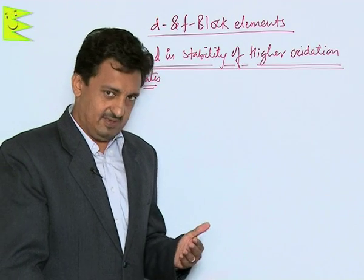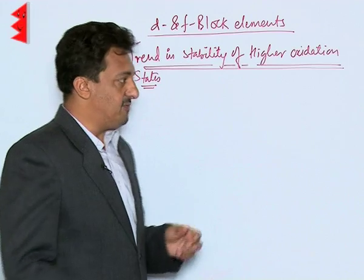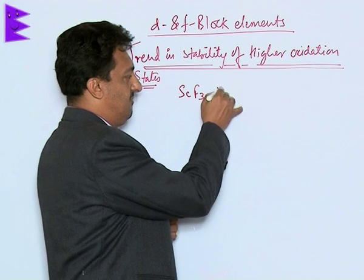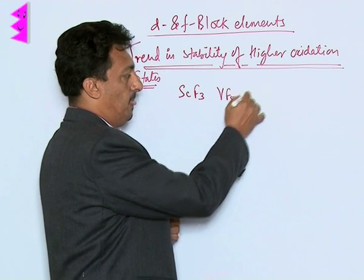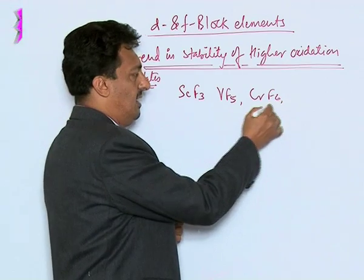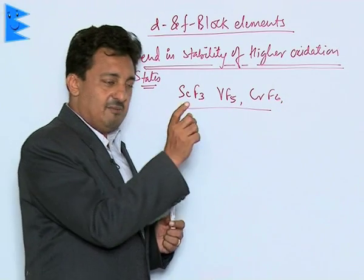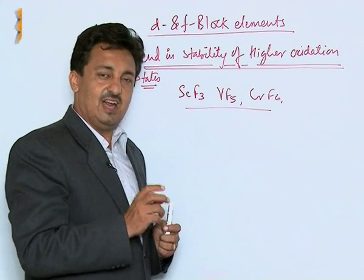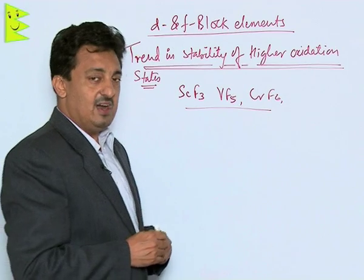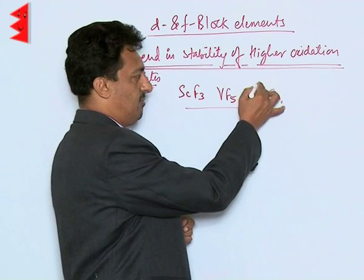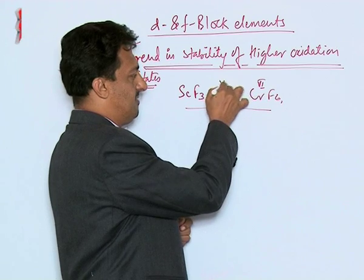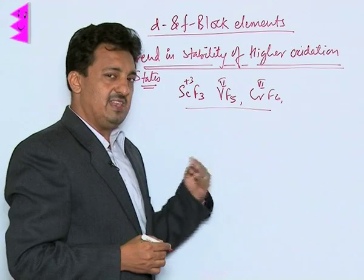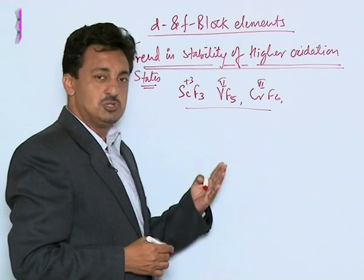Let us discuss their stability. For fluorides, we can have scandium as ScF₃, vanadium as VF₅, and chromium as CrF₆. These fluorides combine with the first half of the 3d series elements, and these elements exist in their highest oxidation states — chromium in +6, vanadium in +5, and scandium in +3.